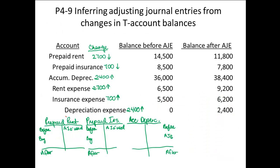In this particular problem, we are given the scenarios of before and after the adjusting entry. Prepaid rent just before making the adjusting entry was $14,500 and just after was $11,800 — so prepaid rent went down $2,700. Rent expense went from $6,500 just before the adjusting entry to $9,200 just after — so rent expense went up $2,700. Therefore rent expired, and we would debit rent expense and credit prepaid rent for $2,700.